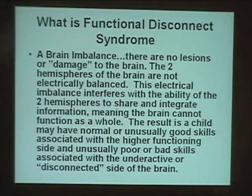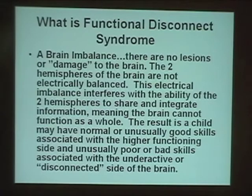The result is that a child or person diagnosed with these neurological disorders may have normal or unusually good skills associated with the higher-functioning side, and unusually poor skills associated with the underactive or disconnected side of the brain. If you reduce the imbalance, those poor skills will start to go away.